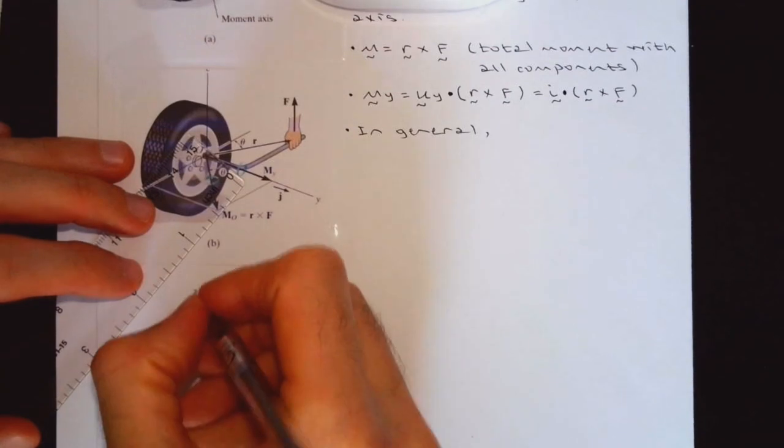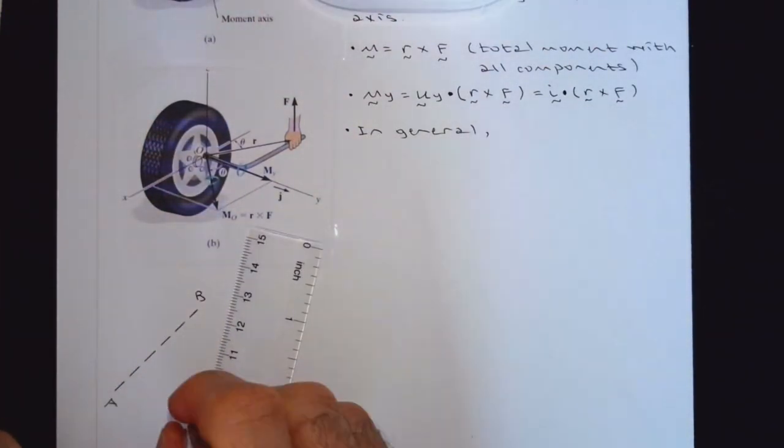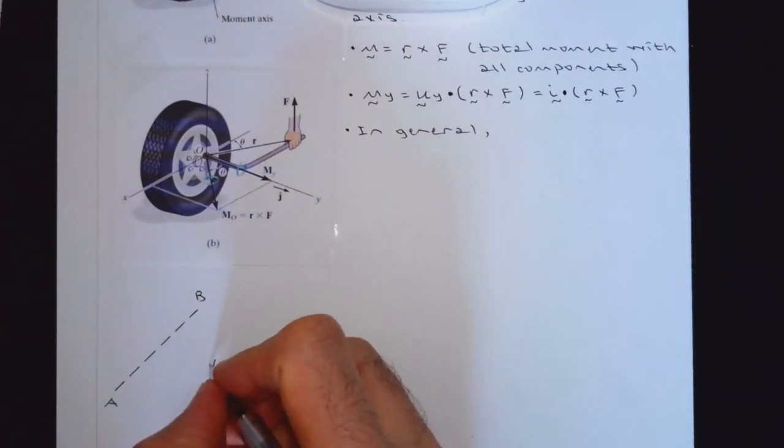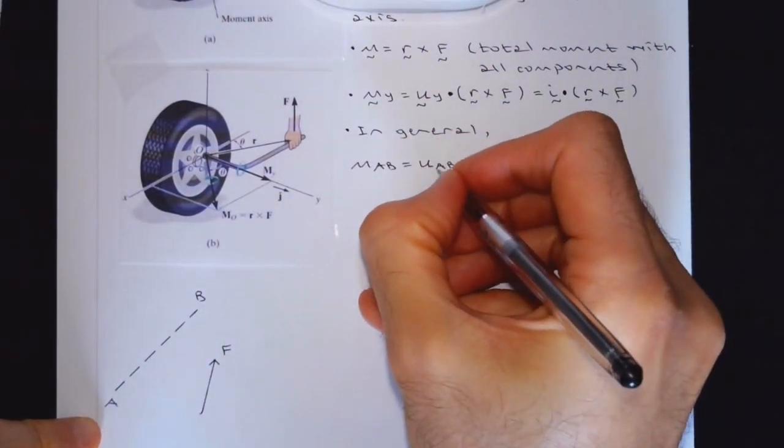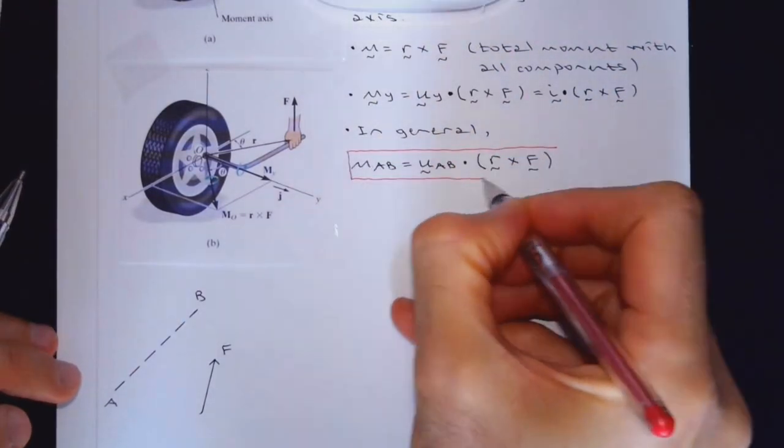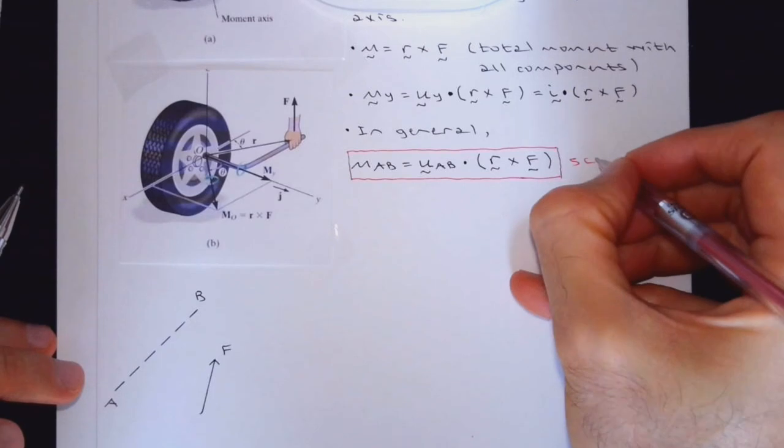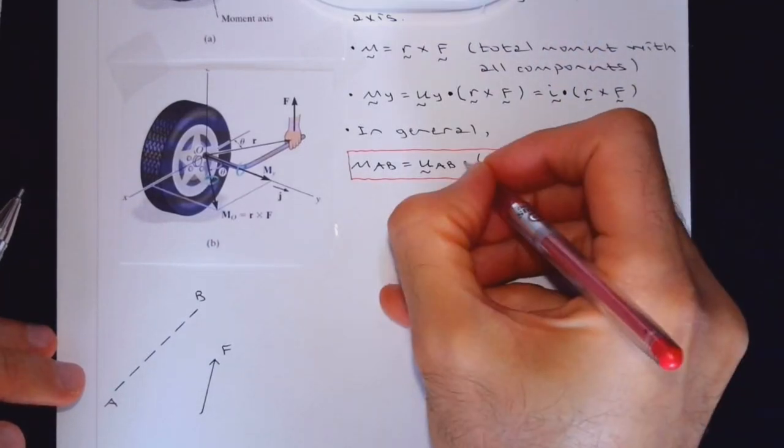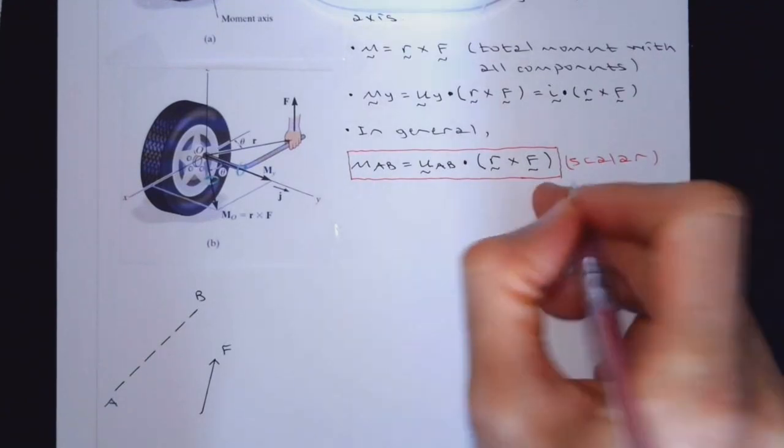This is a, this is b, this is the specified axis right and a force is applied let's say something like this. This is what we are going to be using. The result would be scalar. Why it's going to be scalar because we are using a dot product. We can call this as a triple product.